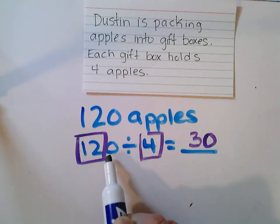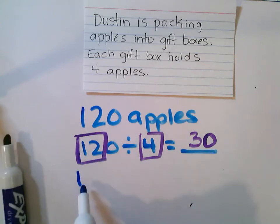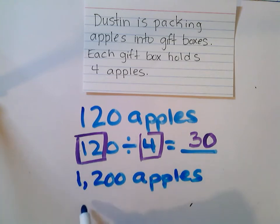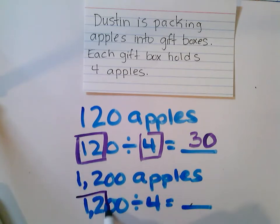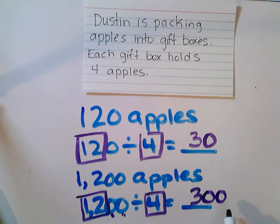The shortcut is we're going to look at those zeros. Let's say Dustin, instead of 120 apples, had 1,200 apples. If he had 1,200 apples to put into gift boxes, we would be doing a very similar division problem: 1,200 divided by four, with four apples in each gift box. I'm still going to use that same basic fact — 12 divided by four is still three — but now instead of 12 tens, I'm going to talk about 1,200s. I'm going to have 300 as my answer, with two zeros in my quotient.